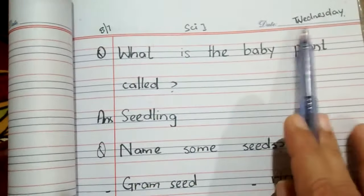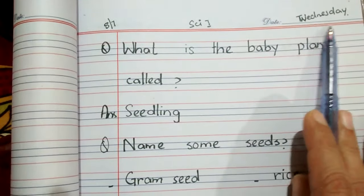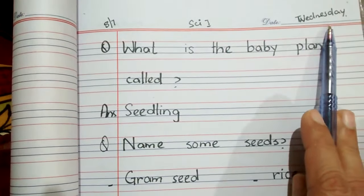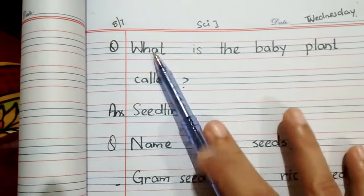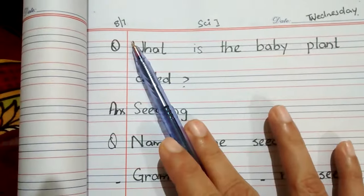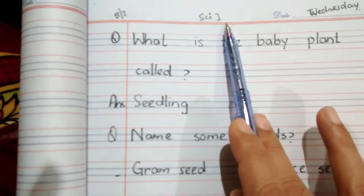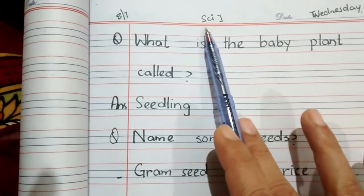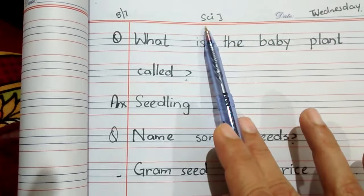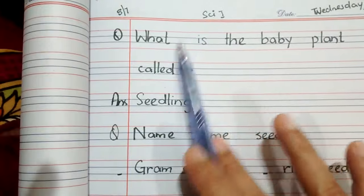Friends of Class 1, today is Wednesday and the date is 8 July 2020. This is your science period.